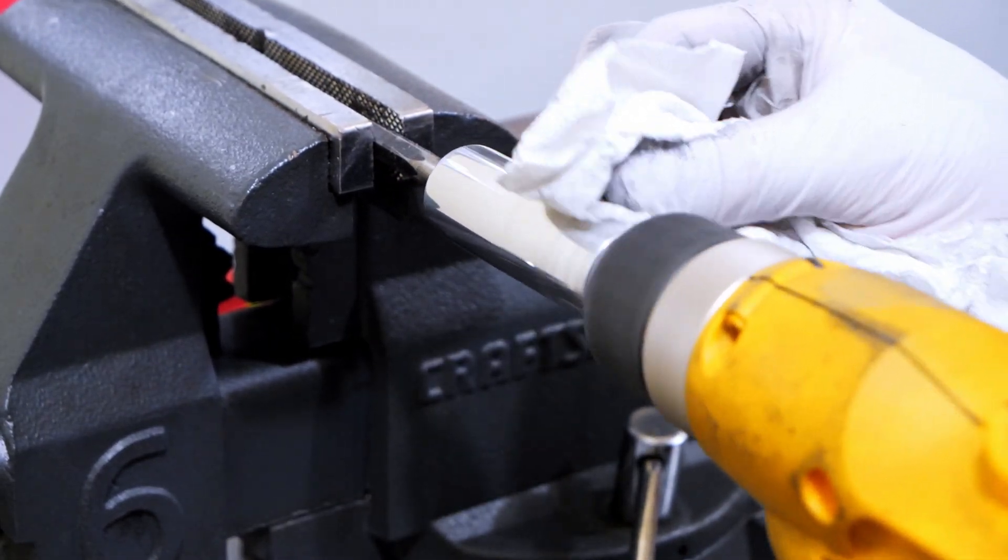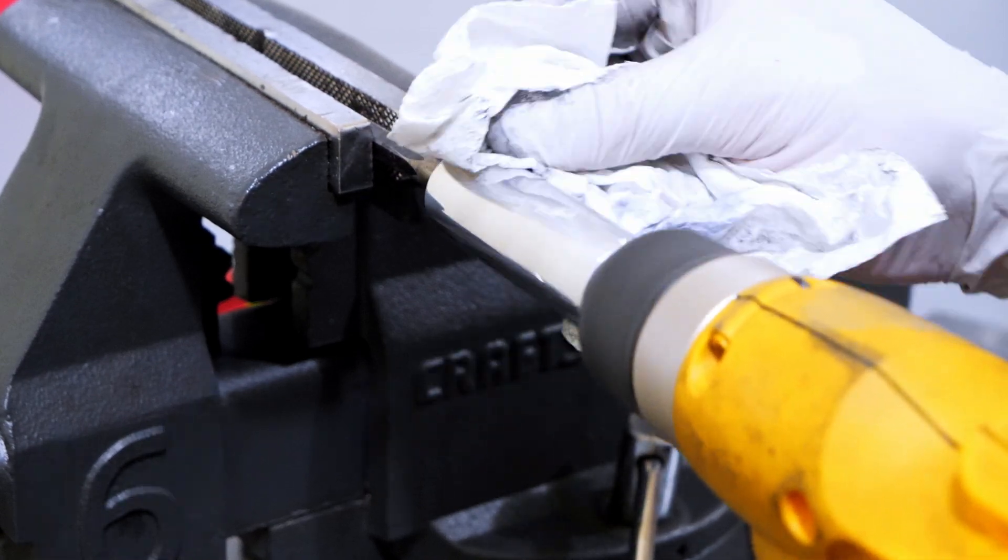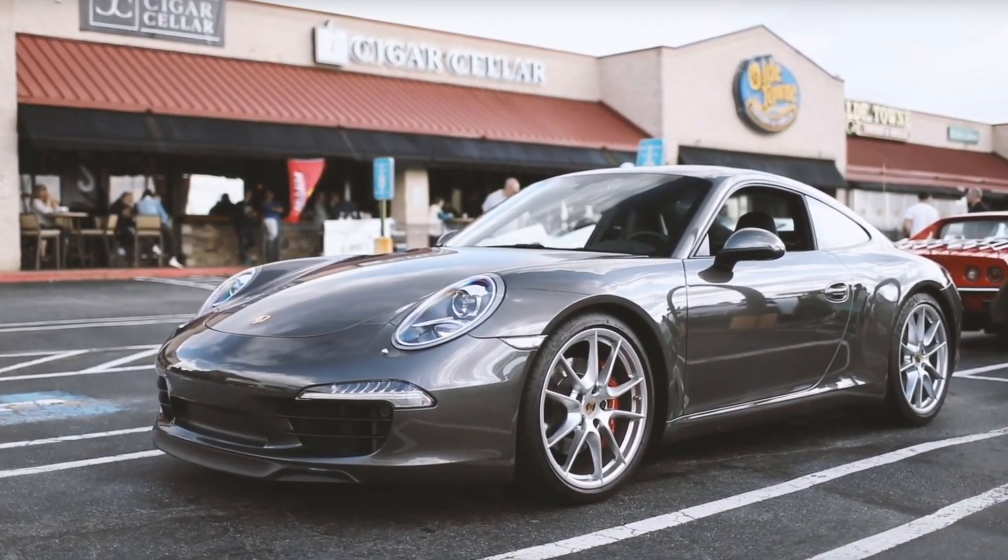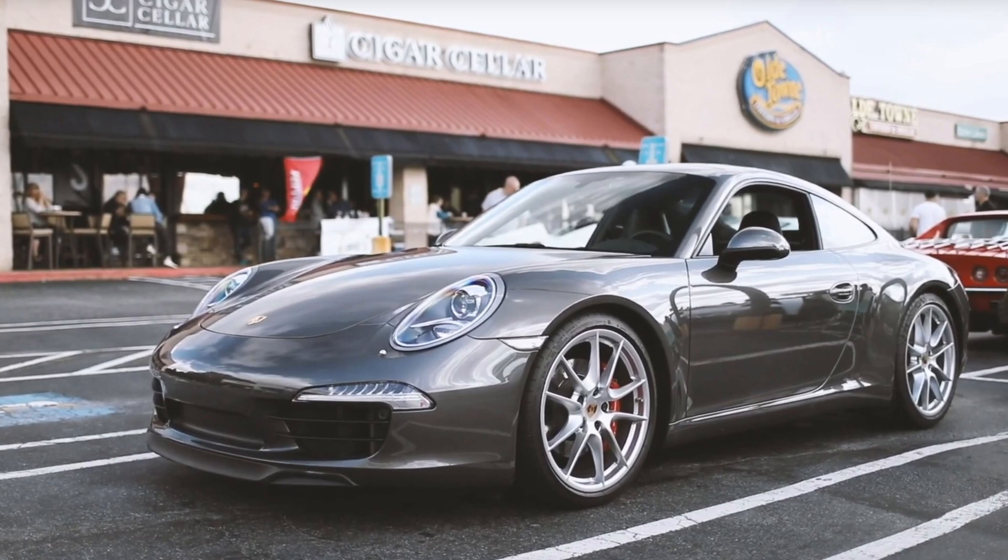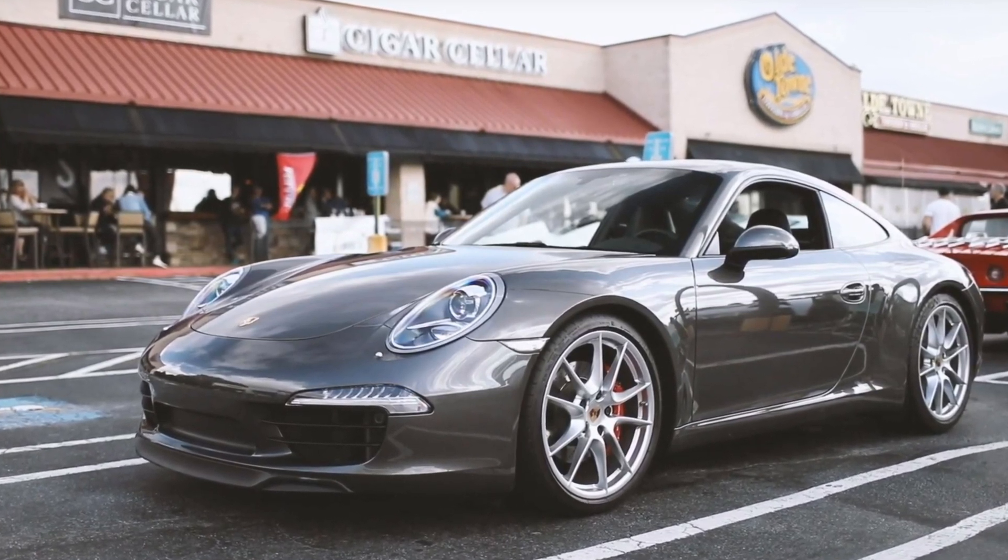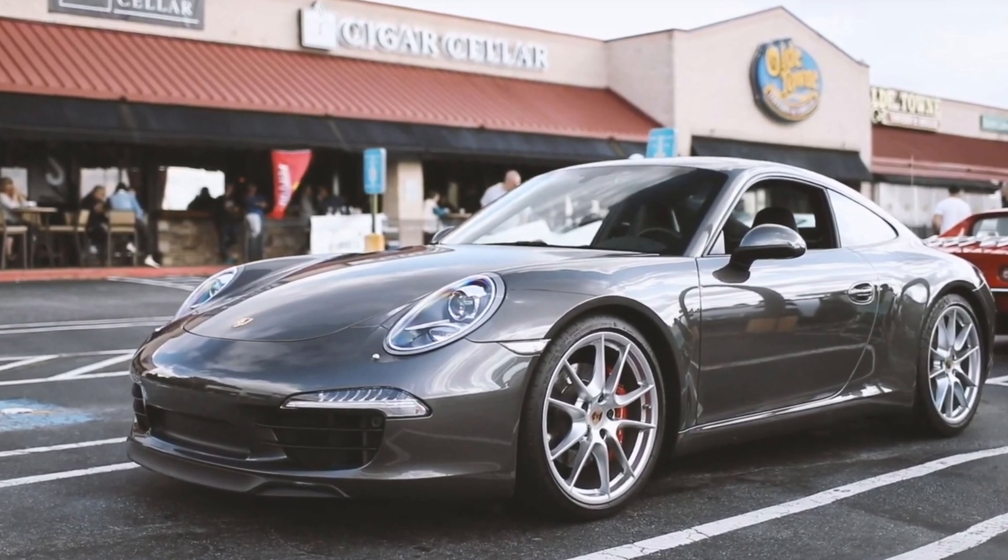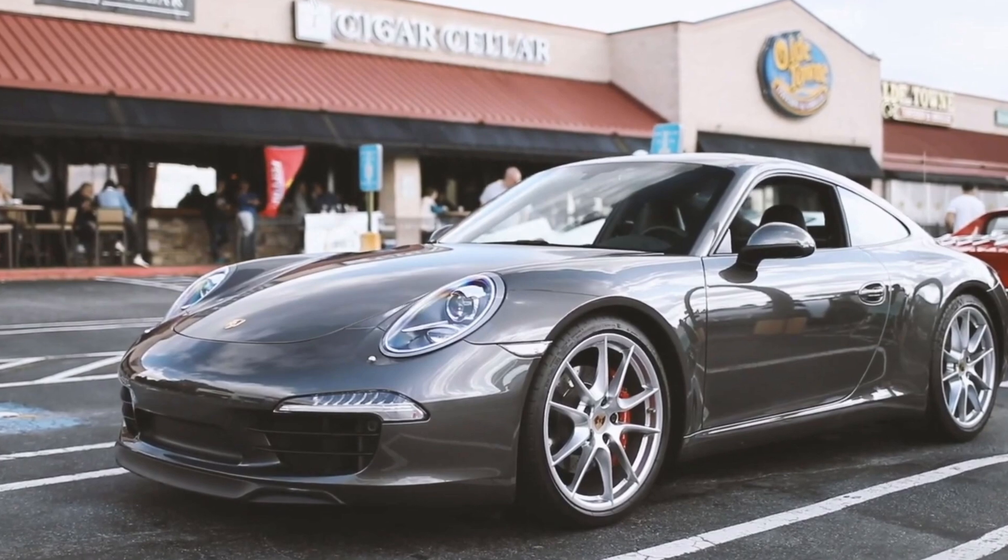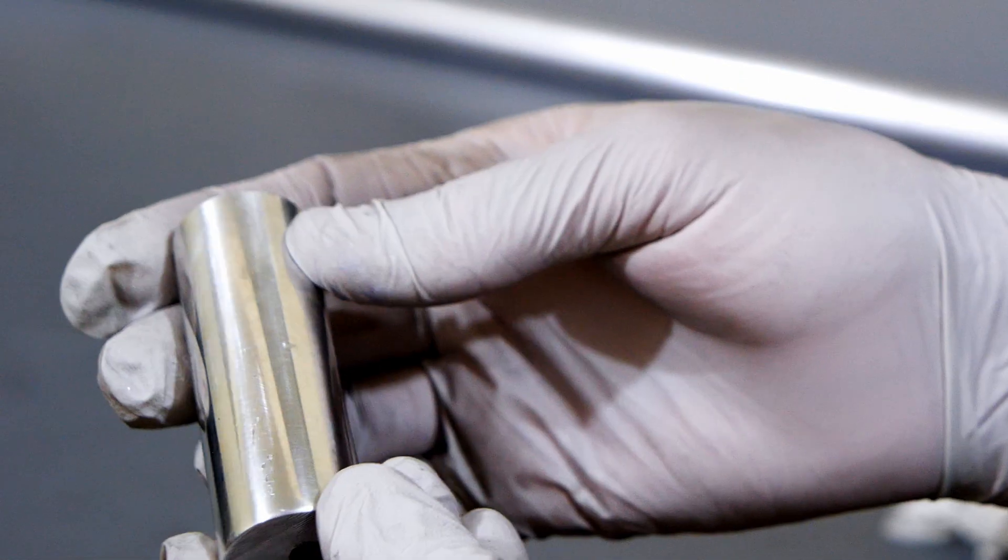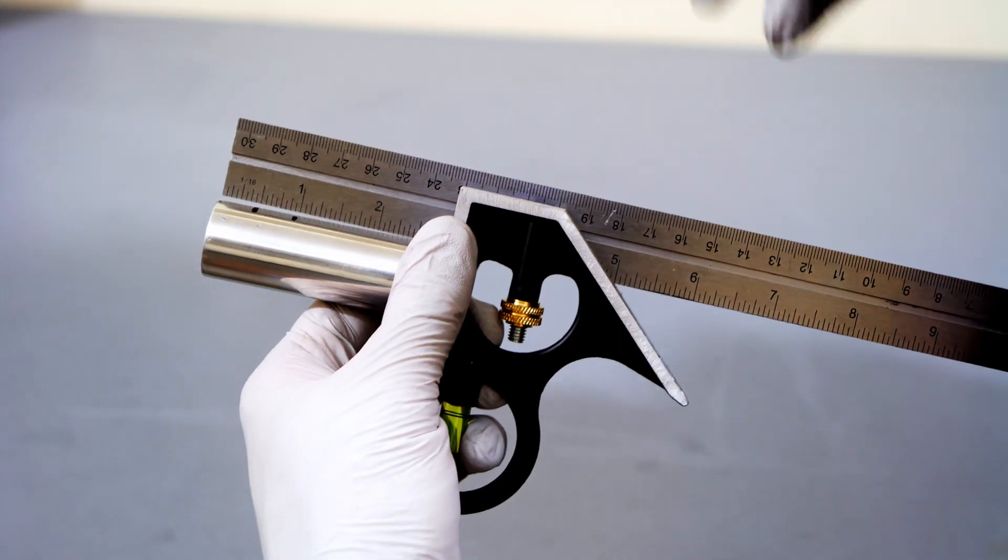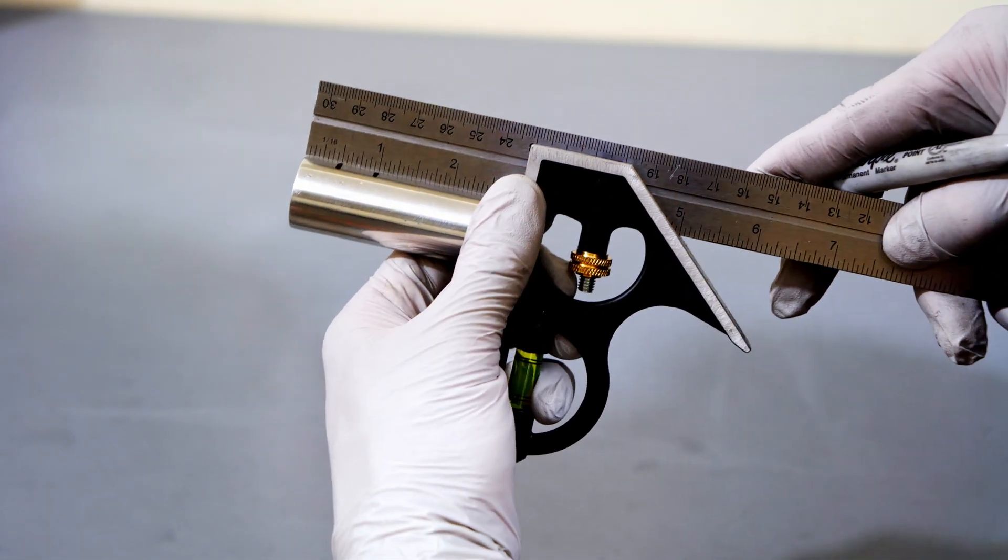Also, there's a car meet in Georgia. It's called Cars and Cigars, which is like an after-meet of Caffeine and Octane. I think they meet at The Cigar Cellar in Kennesaw. So if you guys are in Georgia, all you S-Class owners, try to make it out to that meet. It's the first Sunday of every month. And I've been going there recently, mainly to just advertise the exhaust and everything, but I'd love to meet you guys if you're out there.